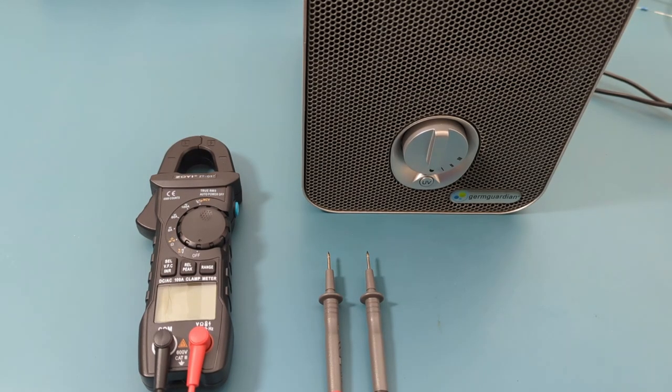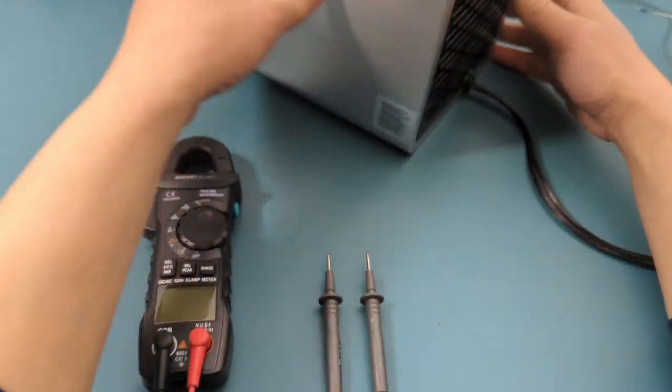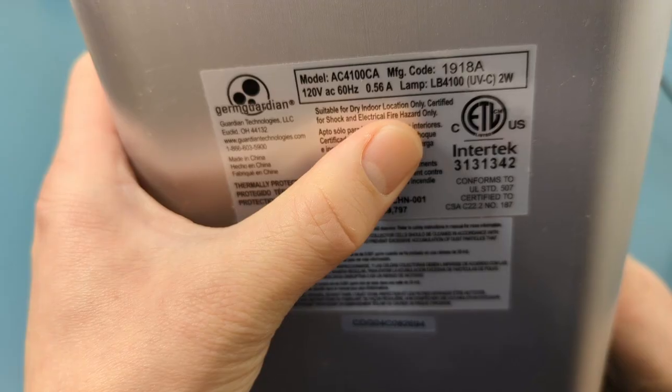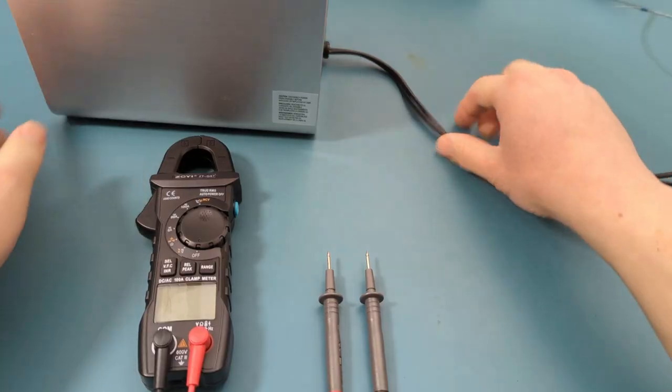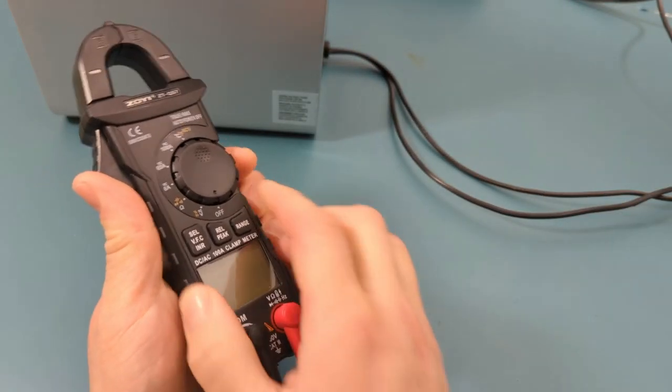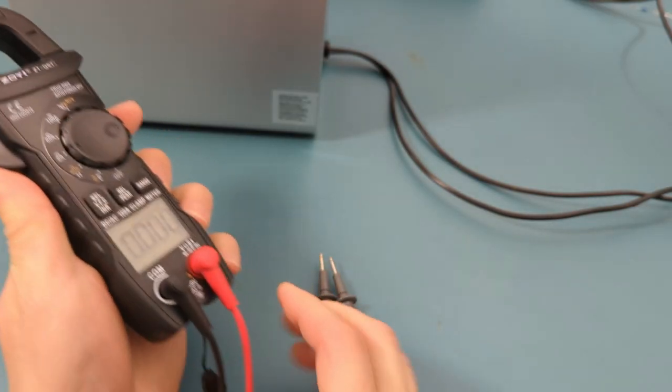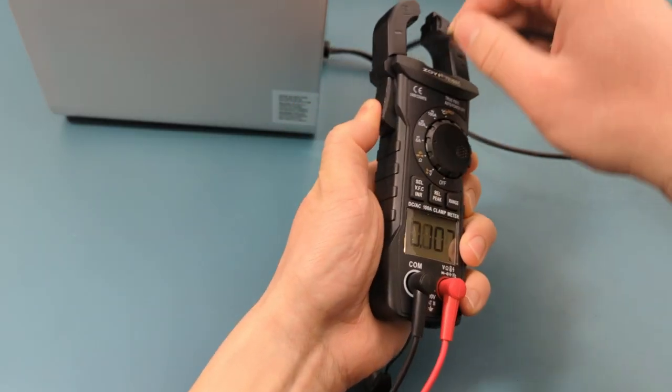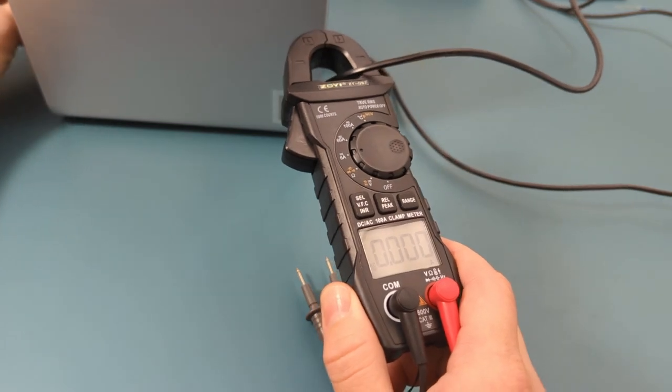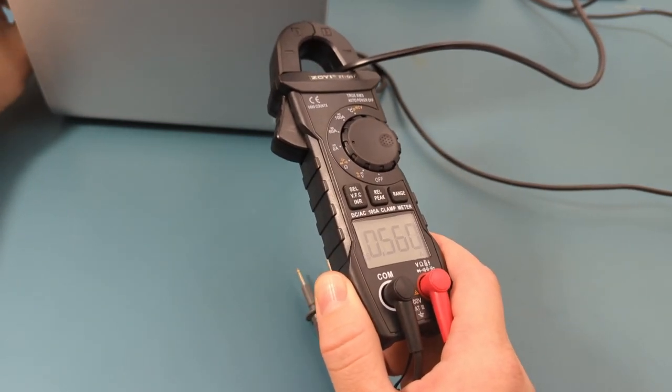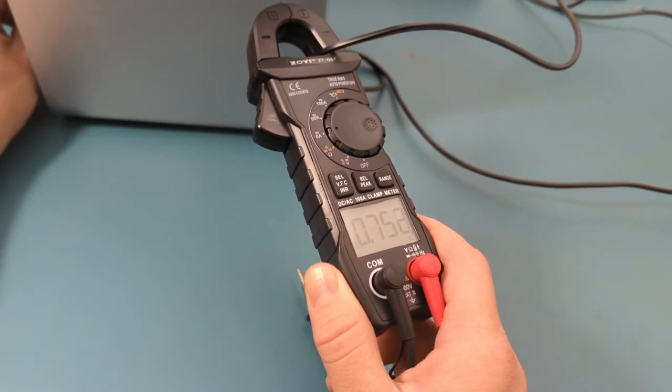The next test involves measuring the current. I have a portable air filter that connects to a wall outlet. As seen in the specs, it requires an input of 120 volts and 0.56 amps. Turn the dial to the amperage setting. Since the air filter only draws 0.56 amps, I'll select the 6 amp option. Press the trigger, then insert the power cable into the clamp. There shouldn't be any amps showing yet. When I turn on the air filter, the reading shows approximately 0.56 amps. When I increase the speed, the filter does increase slightly to 0.75 amps.